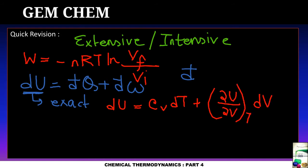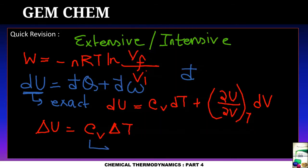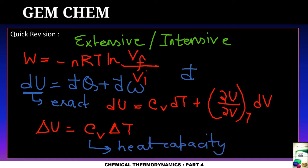We know the expression for internal energy: dU = Cv dT + (∂U/∂V)_T dV. More specifically, ΔU = Cv·ΔT, where Cv is the heat capacity at constant volume. So up to this part we are familiar with the previous content.